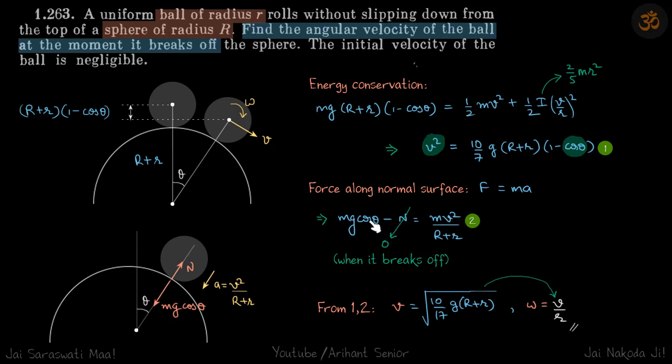So this is another relation between v² and cos θ. So we have two equations, two variables v and θ. We solve that and we get the value of v. But we want ω, so ω will simply be v/r.